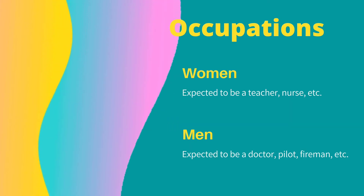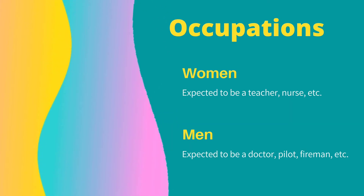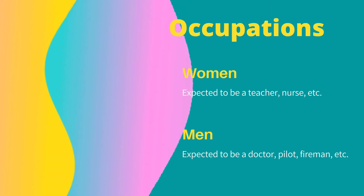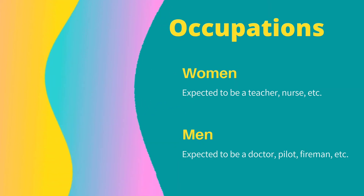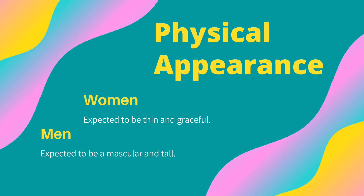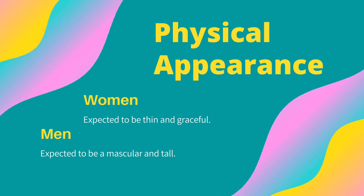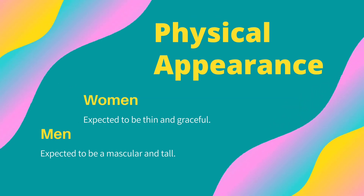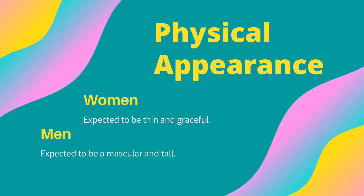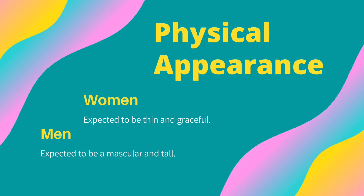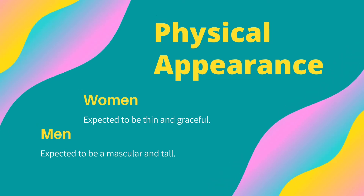The third one is occupation. Some people are quick to assume that teachers and nurses are women, and that pilots, doctors, and engineers are men. And for the last one, we have physical appearance. For example, women are expected to be thin and graceful, while men are expected to be tall and muscular. Men and women are also expected to dress and groom in ways that are stereotypical to their gender.